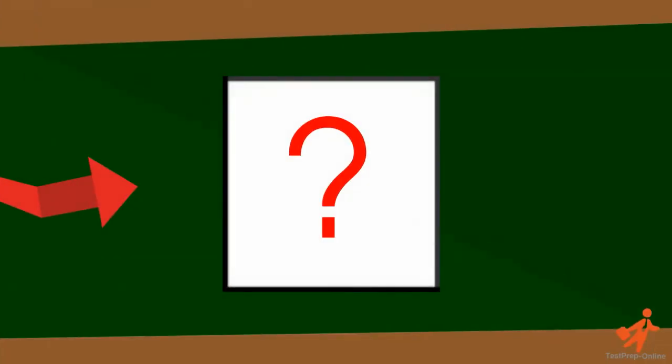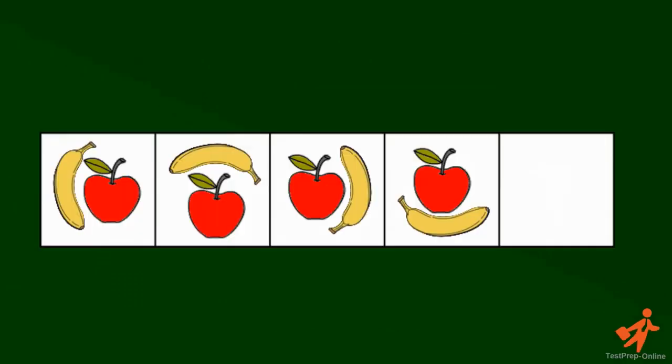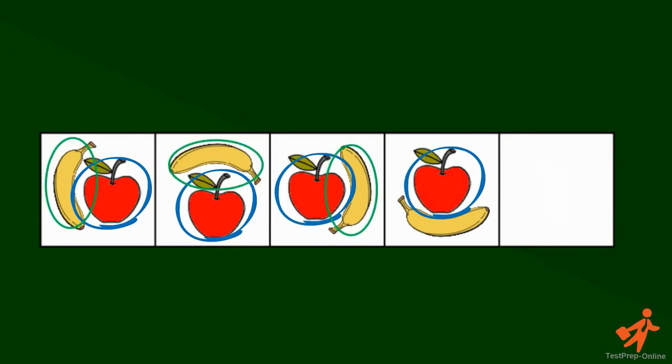How do we know which picture comes next? The trick with picture series questions is to understand the pattern. We can see that in this case the apple stays in the middle of the picture, while the banana keeps changing positions around it.